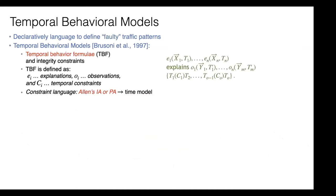Our initial start of this work is called temporal behavioral models. The idea is to have a declarative language to define faulty traffic patterns. This temporal behavioral model is an old language introduced in 1997. They're made of two components.